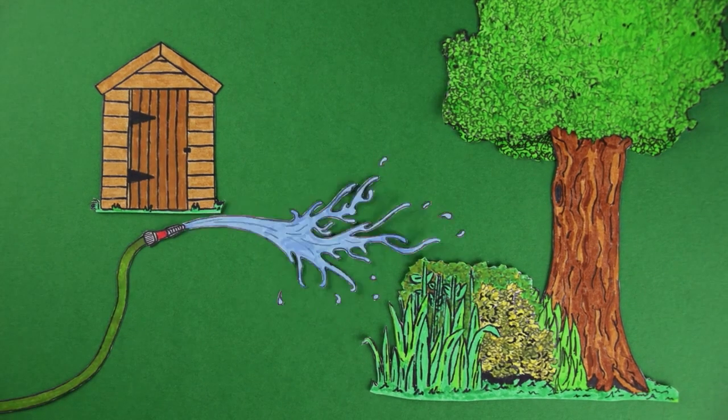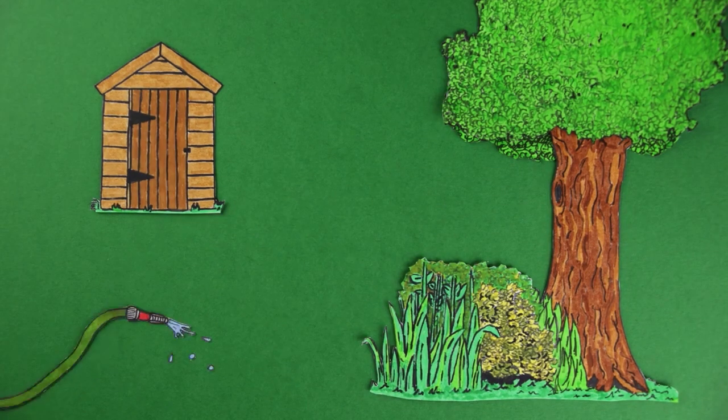The brain needs oxygen and energy to work well, a bit like how a garden needs water.